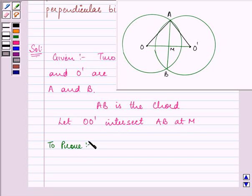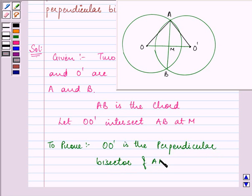So we need to prove that OO' is the perpendicular bisector of AB.